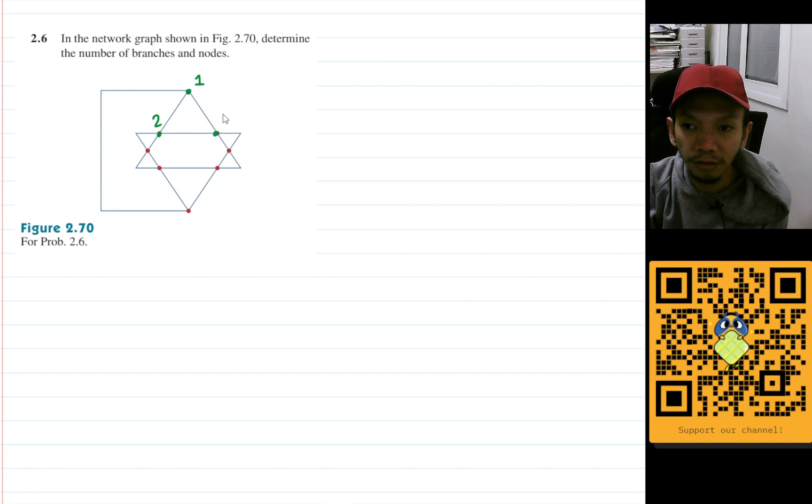This one here will be node number three, this one here node number four, this one here is node number five, this one here is node number six, this one here is node number seven, and this one here will be node eight. So we'll have eight nodes here.